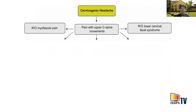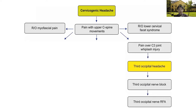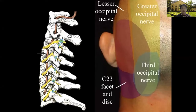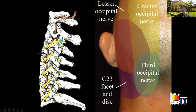After ruling out lower cervical spine issues and managing myofascial pain, we trace the history. If the patient has pain at the C3 region after whiplash injury, it could be the most typical cervicogenic headache coming from the third occipital nerve. The third occipital nerve is anatomically very close to the C2-3 facet. For fluoroscopy-guided radiofrequency ablation, we insert three consecutive nerve block cannulas. The referred pain will cover the corresponding region.